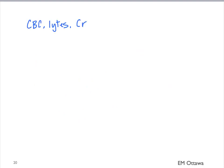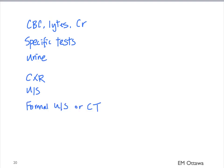In summary, we discussed the labs and imaging for patients with abdominal pain. We order CBC, electrolytes, and creatinine, then specific tests based on where the patient's pain is. Remember that urine is important to rule out pregnancy and to diagnose conditions such as renal colic and UTI. In terms of imaging, x-ray is useful for obstruction, perforation, and foreign body, while bedside ultrasound can quickly provide key information. Finally, formal ultrasound or CT can provide a specific diagnosis. In the next video, we'll discuss how to put this all together.